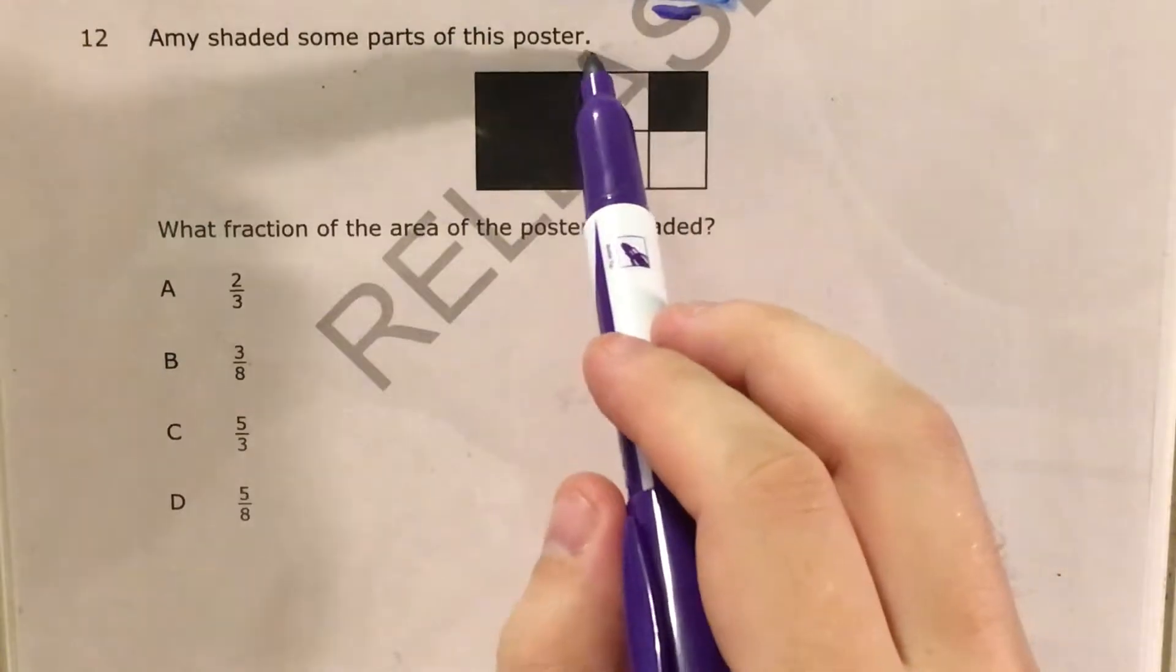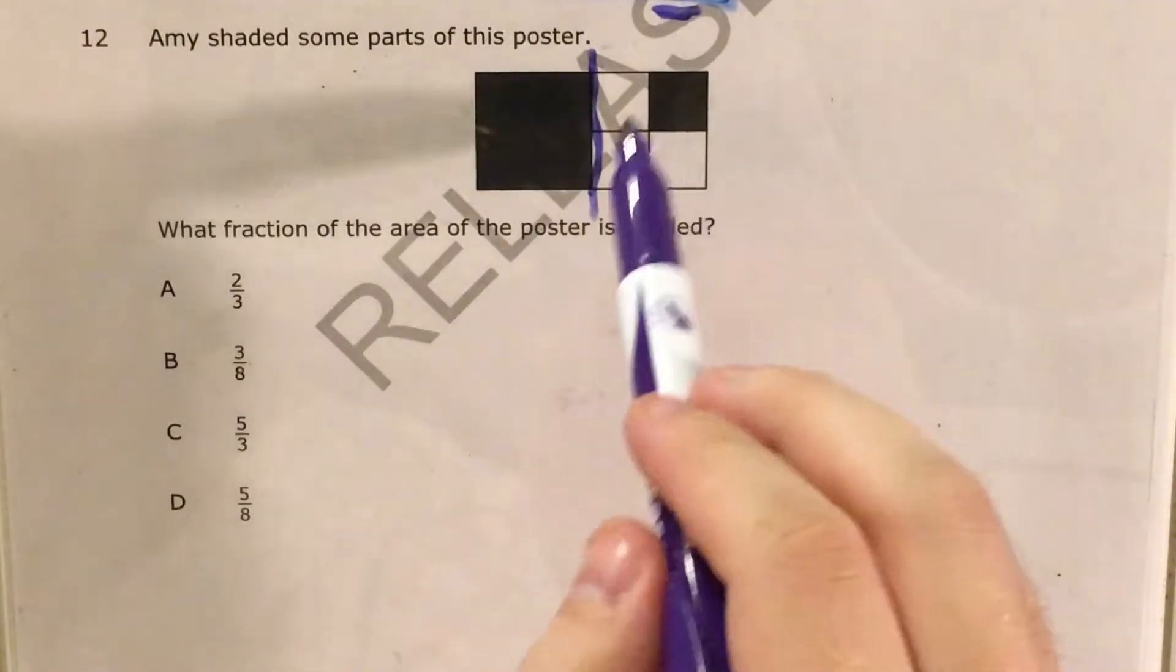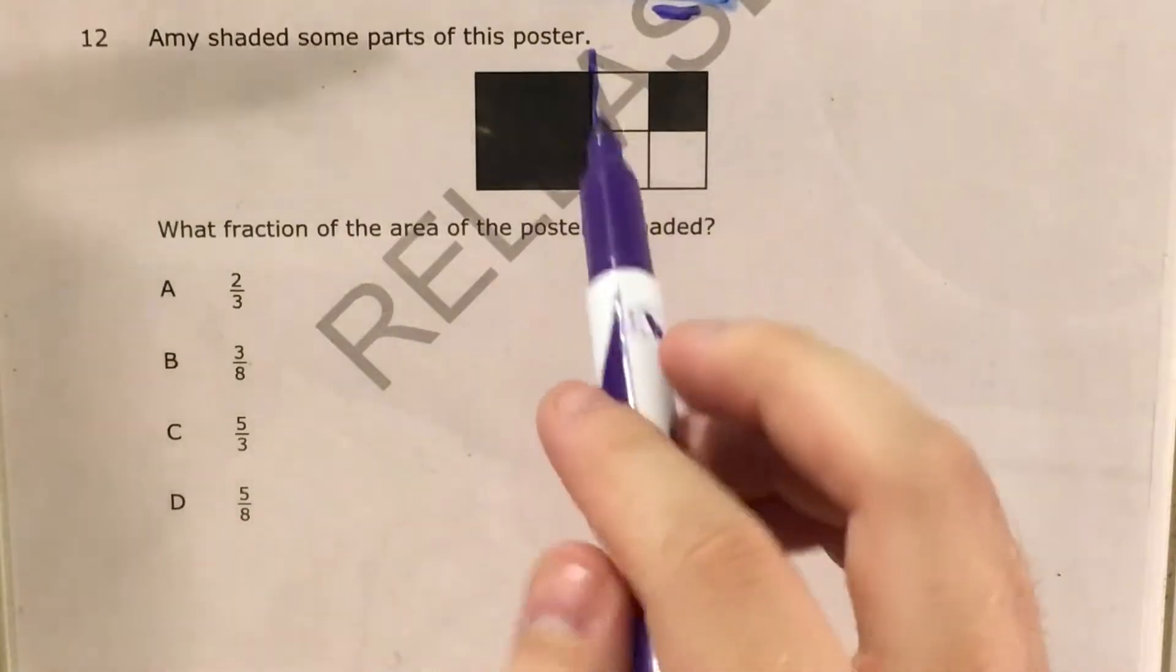Alright, so I'm gonna start by recognizing that this poster seems to be cut into two halves. One half is split into four pieces, the other half is just here. So this left part that's shaded in is one half and the right part that's shaded in is one something.